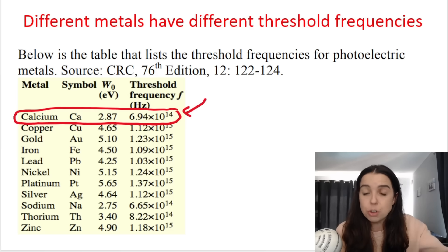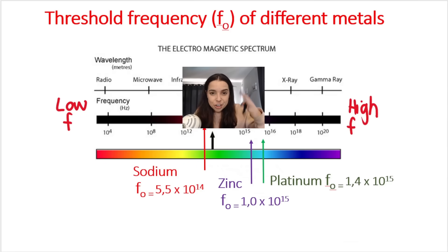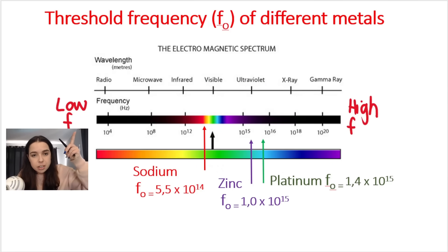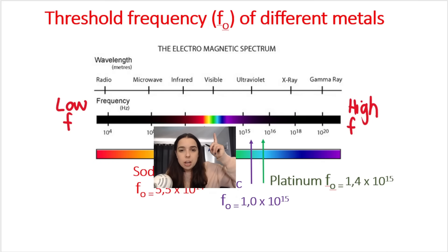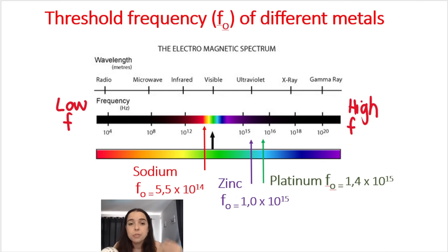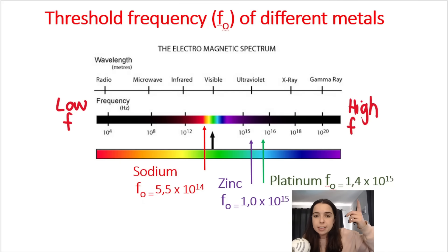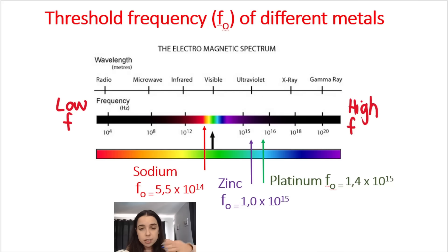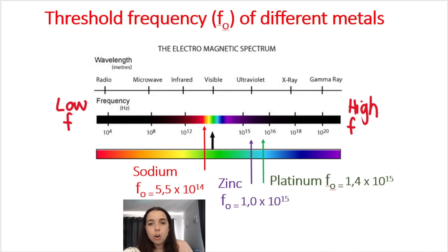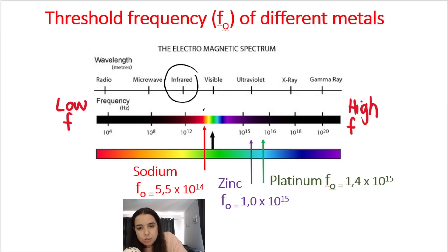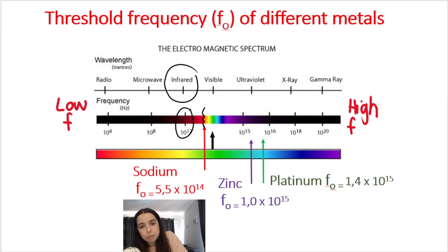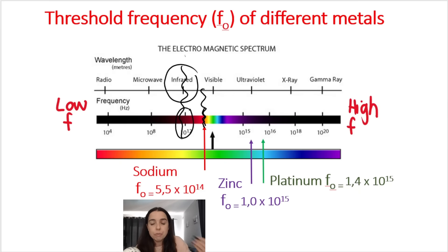Over here we can see the electromagnetic spectrum, which you should be familiar with from grade 10 — the low-frequency end and the high-frequency end, with visible light in between. I have the threshold frequencies of different metals: sodium, zinc, platinum. Platinum has the highest threshold frequency; sodium has the lowest. For example, if I shine infrared light on sodium, the infrared light will not have a high enough frequency to cause electrons to be ejected from sodium, because sodium's threshold frequency is higher than the infrared frequency.